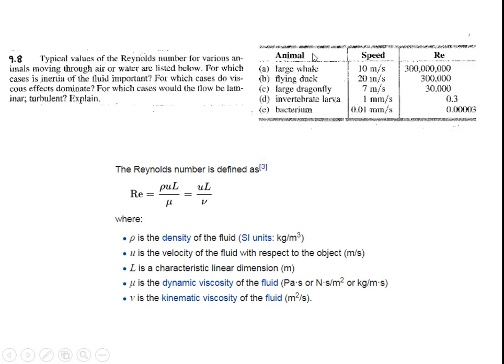Problem 9.8: Typical values of the Reynolds number for various animals moving through air or water are listed below. For which cases is inertia of the fluid important? For which cases are viscous effects dominant? For which cases is the flow laminar or turbulent? These are all representative values. Large whale: 10 meters per second, which is very high speed. The whale's characteristic length will be more, which means for Reynolds number, length will be more, speed will be more, water density will be more, and viscosity will be more.